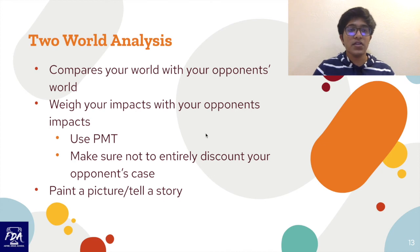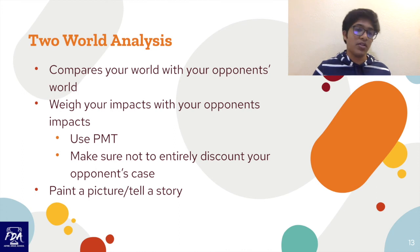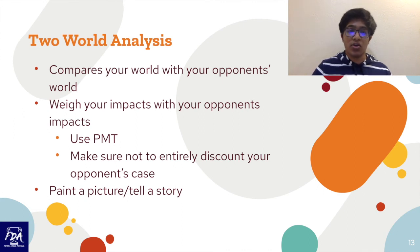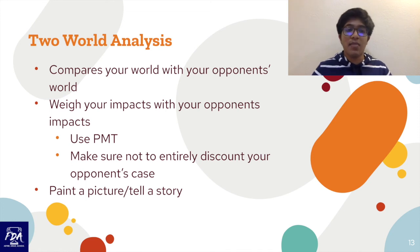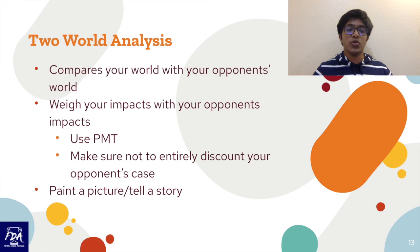Now let's go over two-world analysis and how it ties into PMT analysis. Two-world analysis is comparing your world with your opponent's world — the two scenarios — and seeing how one is more important than the other. You weigh your impacts against your opponent's impacts and use PMT to show how yours is more important. Use whichever PMT element you are winning on to show it's more prioritized than your opponent's. Make sure not to entirely discount your opponent's case though — if you say their entire case doesn't matter, the judge will immediately notice they have impacts of their own. Give some credit to them while making it clear you win in the comparison.